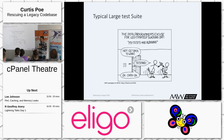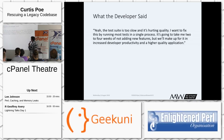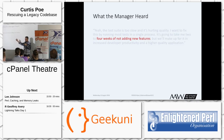So a developer says we need to fix this. They tell their manager: the test suite is too slow and it's hurting quality. I want to fix this by running most tests in a single process — it's going to take me two to four weeks of not adding new features, but we'll make up for it with increased developer productivity and a higher quality application. And the manager hears something a little bit different: four weeks of not adding new features. And there's a very good reason for this.